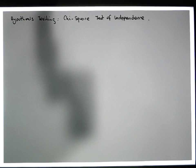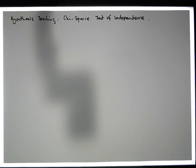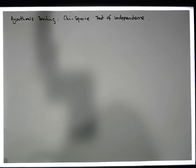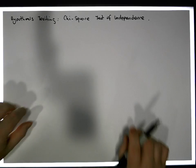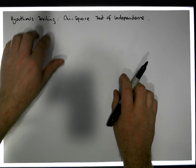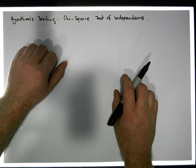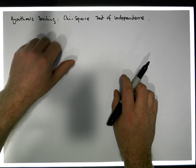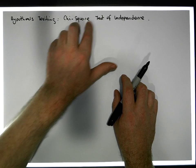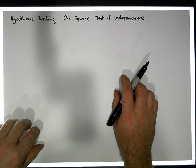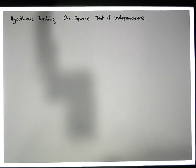Hi guys, this is Jonathan Lambert with the Mathematics Development and Support Service at the National College of Ireland. This short video, another in our series dealing with hypothesis testing, is going to concentrate on what's known as the Chi-square Test of Independence.